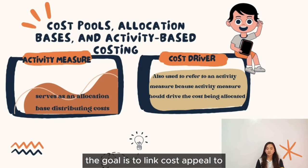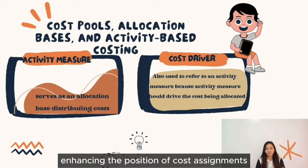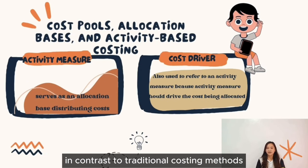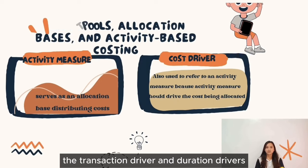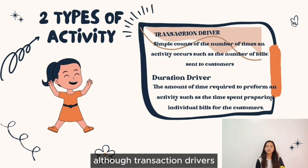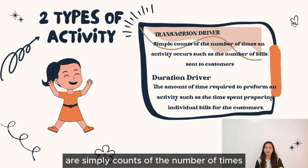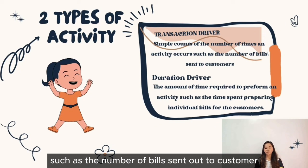Activity measures serve as the allocation base for distributing costs, quantifying the level of a particular activity that drives resource consumption. The term 'cost driver' is used to refer to an activity measure because the chosen measure should essentially drive or influence the cost being allocated. There are two most common types of activity drivers: transaction drivers, which count the number of times an activity occurs, and duration drivers, which measure the amount of time required to perform an activity.